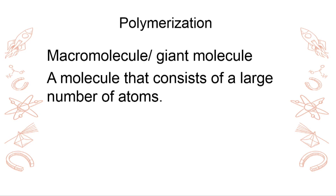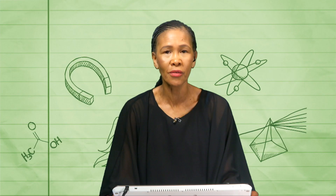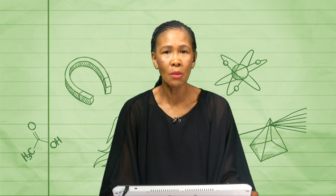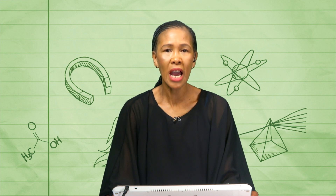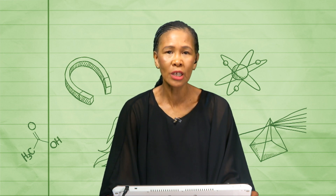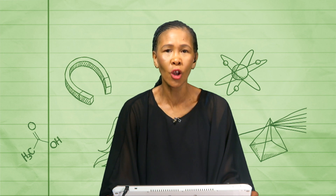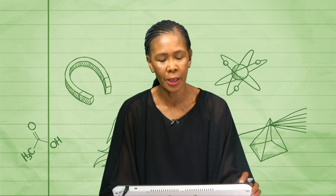And then you've got a macromolecule — this is a giant molecule. It is a molecule that consists of a large number of atoms. Seeing that you're talking about organic compounds here, we are talking about the one that will have a long chain with lots of carbon atoms.